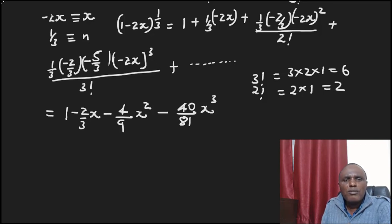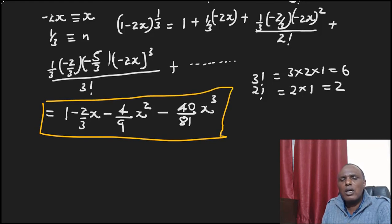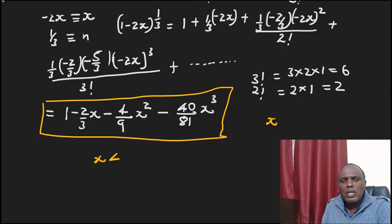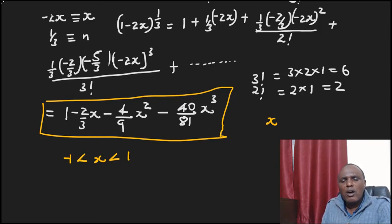We now have all four terms in the binomial expansion. Remember that for this expansion to be correct, the value of x must range between negative 1 and 1 — that is the only time this expansion is valid.